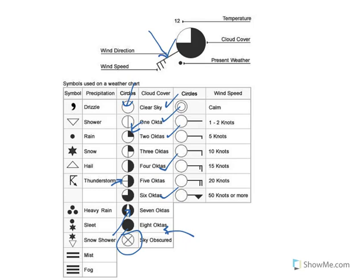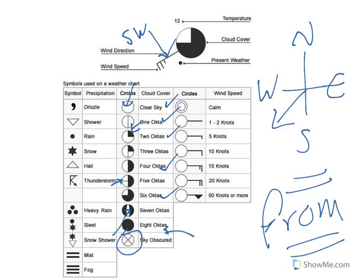The limb tells us the direction the wind is coming from. If we remember our compass — north, east, south, west — in this case the limb is pointing to the southwest. So our wind is coming from the southwest. That's quite important: it's always where the wind comes from. It's coming from the southwest.